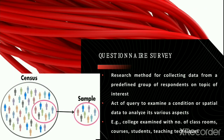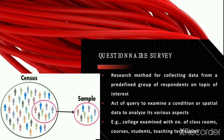A questionnaire survey can be defined as a research method for collecting data from a predefined group of respondents to gain information and insight on various topics of interest. It is the act of querying to examine a condition, situation, or spatial data to analyze its various aspects. Due to the non-availability of proper data, organizations generally conduct field surveys. One advantage is that the agency collecting the data has control over how the data is collected. For example, a college in a spatially referenced location may be surveyed for factors like number of classrooms, courses being taught, number of students, and use of various techniques.